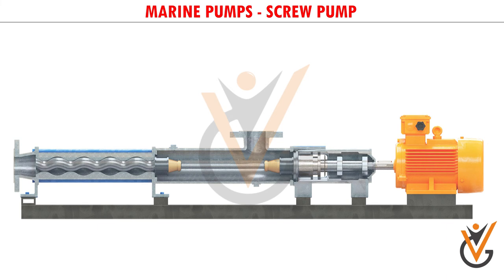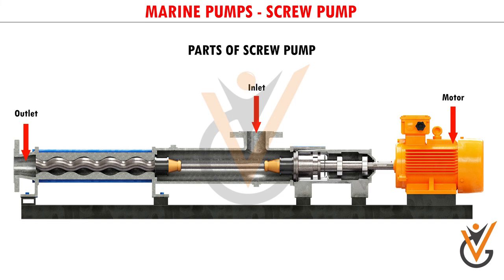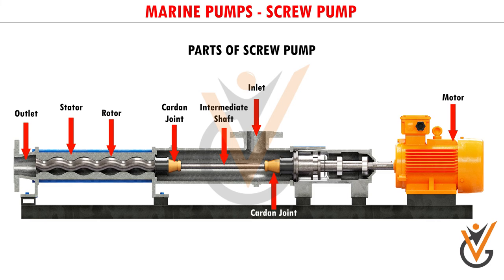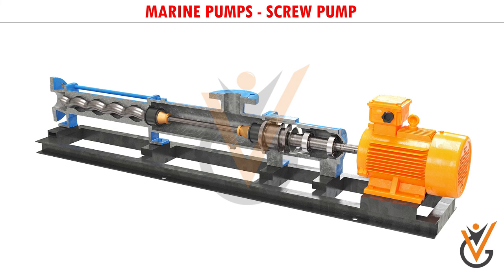They are also used as burner feed for inert gas generators. Parts of a screw pump include the motor, outlet, inlet, stator, rotor, card joint, intermediate shaft, and transmission shaft.